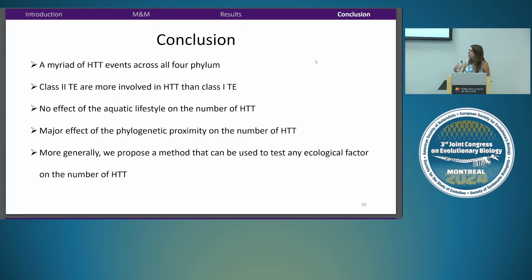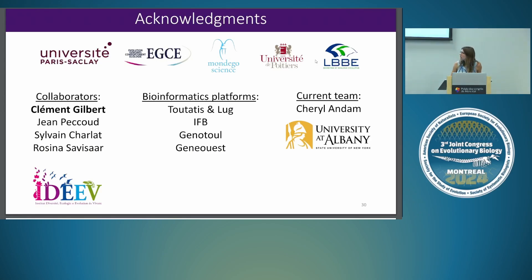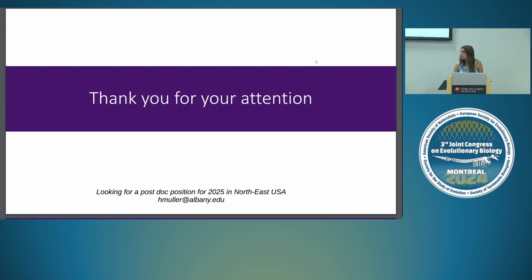To conclude: we found a myriad of HTT events across all four phyla of animals studied. We found that class 2 transposable elements were more involved than class 1. We could not find any effect of aquatic lifestyle on the number of HTT, but we found a strong effect of phylogenetic proximity. More generally, we propose a method that can be used to test any ecological factor on the number of HTT. Thank you.